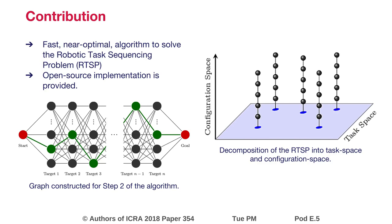We propose a three-step algorithm. Step 1: find a near-optimal visit order of the targets in task space using classical TSP algorithms. Step 2: for each target, find the optimal robot configuration that minimizes a configuration space metric using a graph search algorithm.